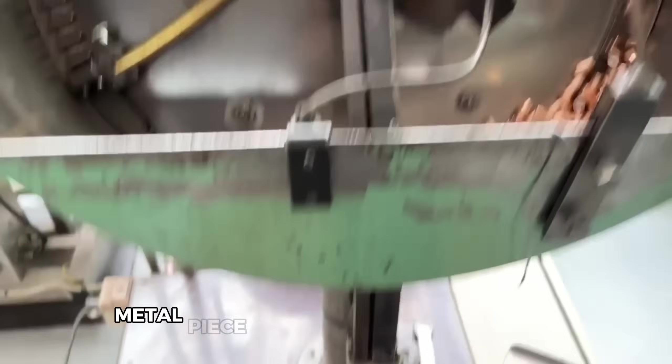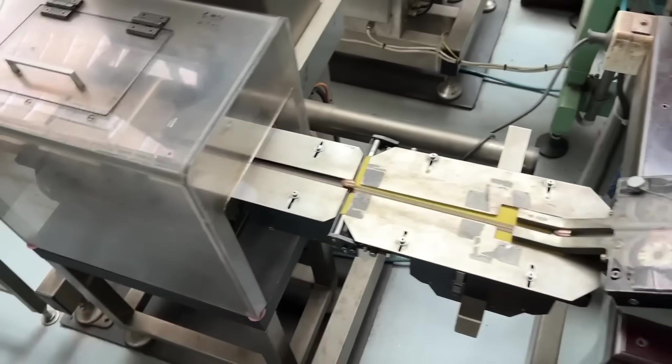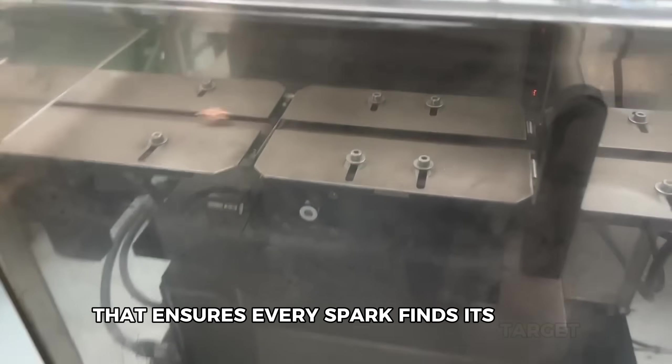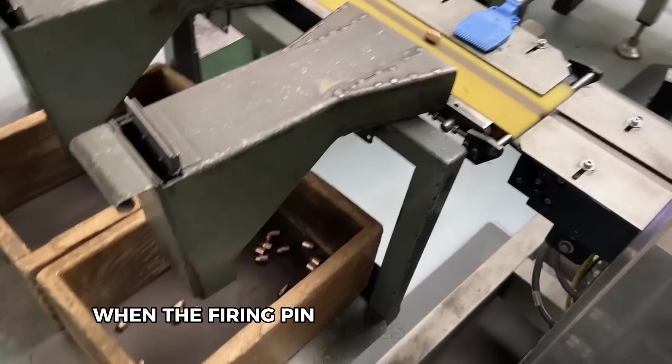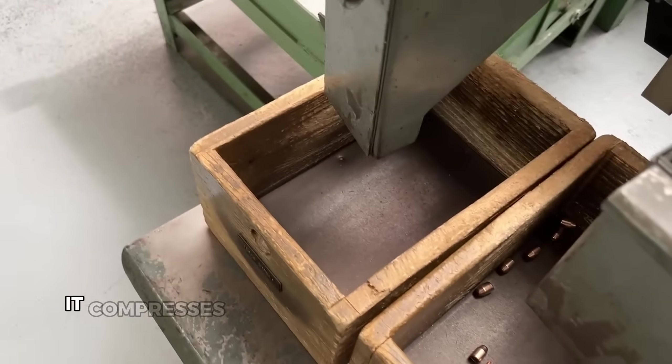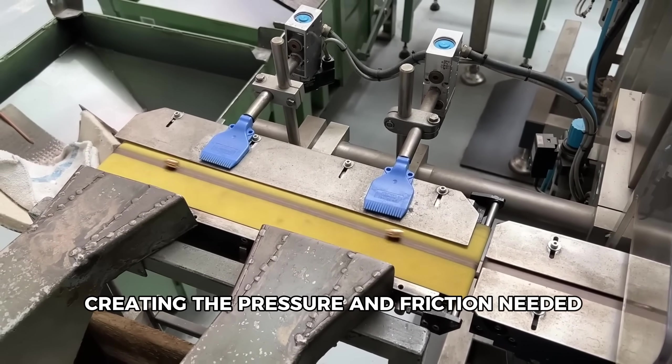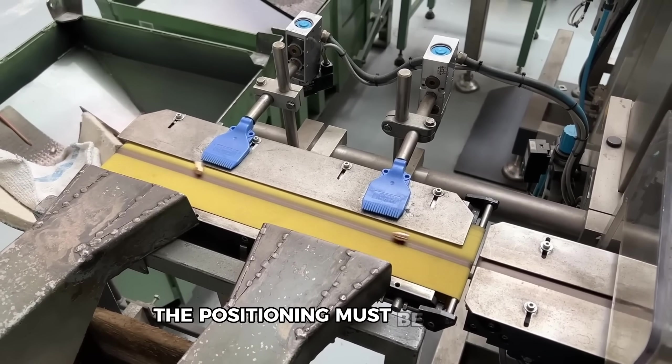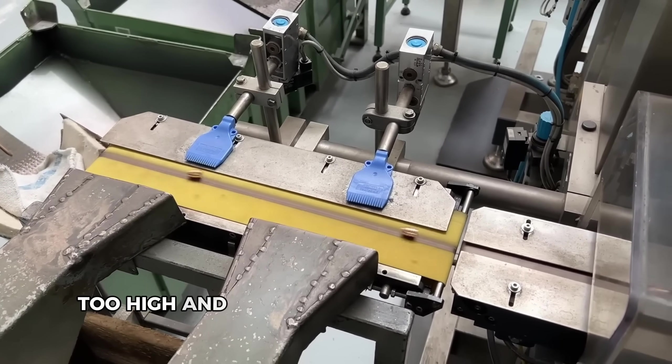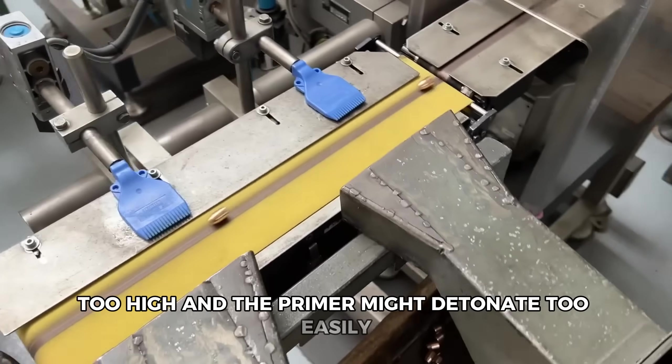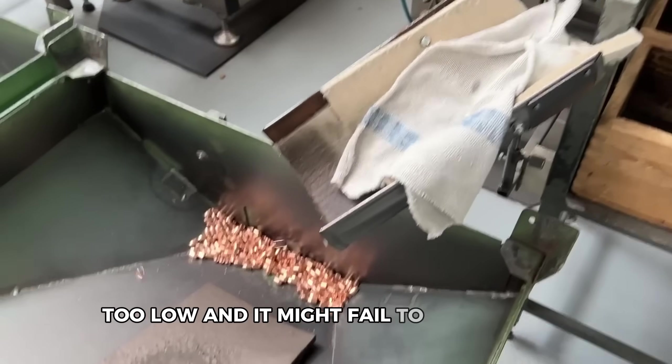Check out how the workers add the next component, the anvil. This small metal piece serves as a tripod anchor that ensures every spark finds its target. When the firing pin strikes the primer cup, it compresses the explosive compound against this anvil, creating the pressure and friction needed for ignition. The positioning must be perfect. Too high, and the primer might detonate too easily. Too low, and it might fail to ignite at all.